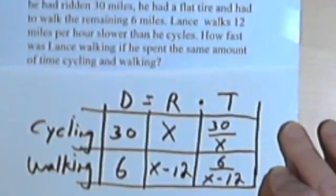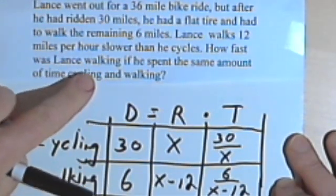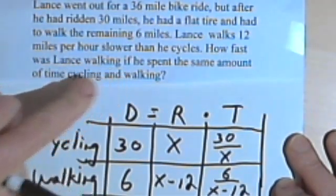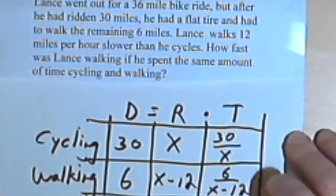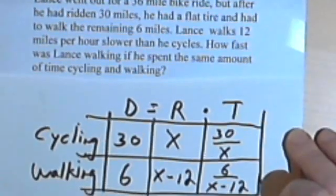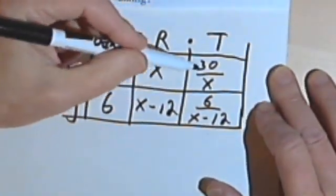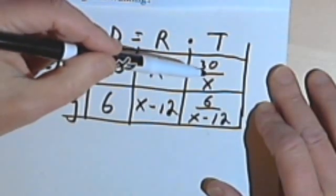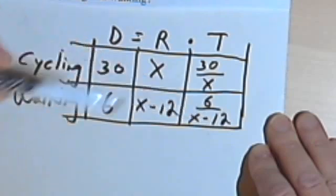Now, if we go back to the problem, there's a key piece of information at the very end. He spent the same amount of time cycling and walking. So that means these two times are equal to each other. So that makes life pretty easy. All we have to do is write an equation with this time, 30 over x, equal to this time, 6 over x minus 12.